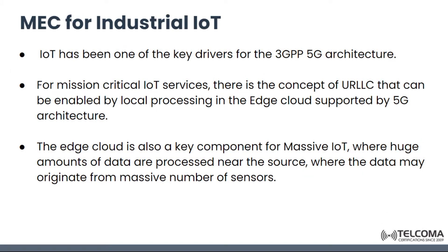Internet of Things is one of the key drivers for 3GPP 5G architecture. For all the mission critical IoT services, there is a concept of URLLC, which is ultra reliable low latency communication, and it can be enabled by local processing in the edge cloud supported by the 5G architecture. The edge cloud is also a key component for massive IoT, meaning huge amounts of data are processed near the source, where data may originate from a massive number of sensors.